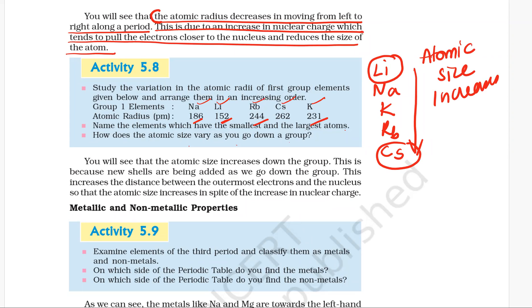As we move down the group, atomic size increases down the group. This is because new shells are being added as we go down the group.